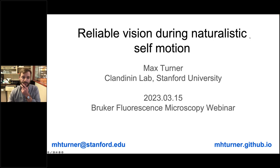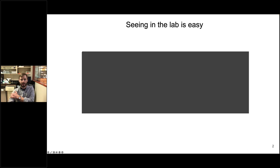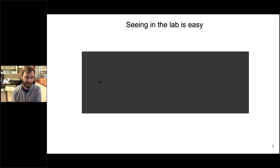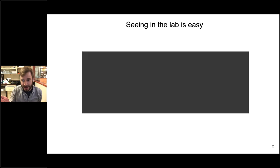To motivate what I'll talk about today, I want to think about a visual neuroscience task that's maybe typical of standard experiments in a visual neuroscience lab. Imagine that you're an animal — or maybe a visual neuron — that's responsible for encoding a small feature of interest, like a small dot moving across the screen. It's a relatively easy task with pretty high signal-to-noise ratio and not many other salient features present.